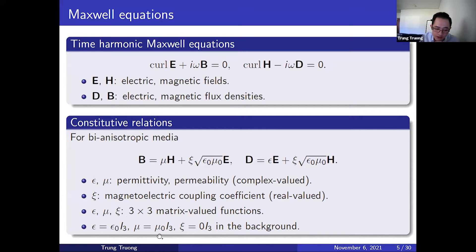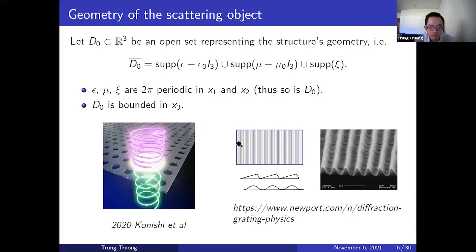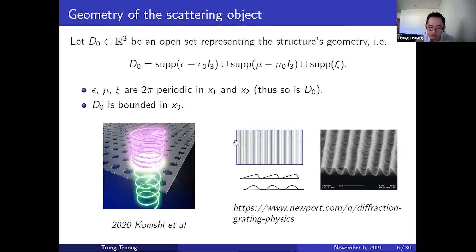Epsilon, mu, and C are all three-by-three matrix-valued functions. We assume that in the background they are just proportional to the identity matrix. Our structure is denoted by D_0, the geometry of our structure, which is mathematically the union of the supports of these three sets. We assume our structure is 2-pi periodic in x1 and x2 — it could be infinitely long in x1 and x2, but it is bounded in x3. On screen you can see some pictures of such structures in real life: on the left, a perforated sheet designed for a specific experiment, and on the right, diffraction gratings, which are a very important type of structure in optics.